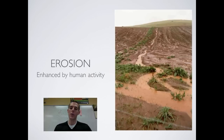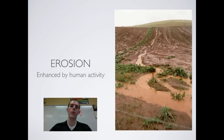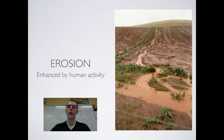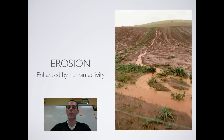Human activities enhance erosion quite a lot. Any activity that removes vegetation from the soil greatly increases erosion because there's nothing left to hold the soil in place. If you deforest an area and it rains hard, there are no trees to stop the rain and no roots to hold the soil, so the rain carries all the sediments and topsoil away. Many farming practices remove all vegetation before replanting, so wind can blow it away. Construction projects also kick up a lot of dust — that would be erosion. Human activity and erosion are strongly associated.